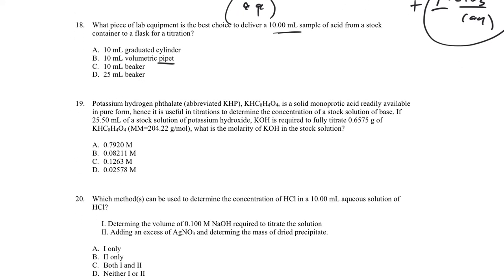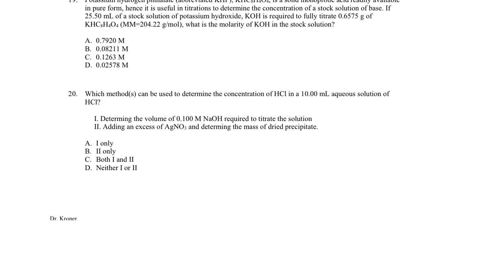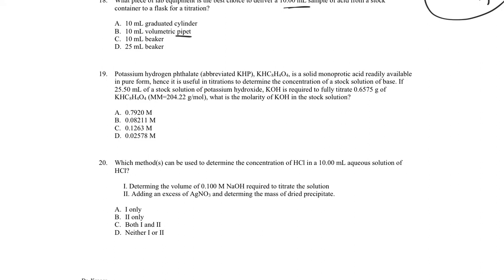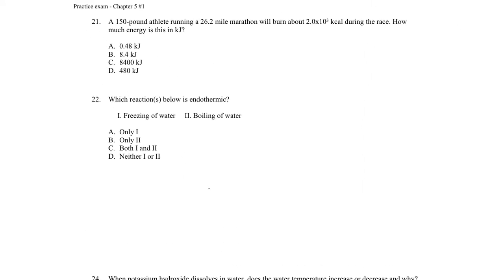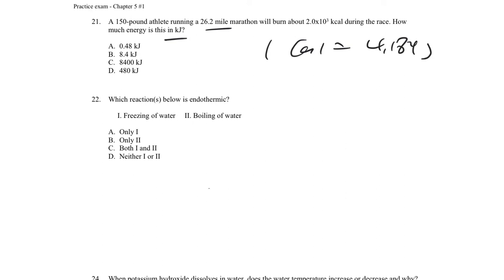Transitioning to some Chapter 5 questions now. There's a calorie-to-joule conversion problem — we won't make too big a deal of this; if needed, the conversion factor would be given. One calorie = 4.184 joules, so 1 kcal = 4.184 kJ. You'd just use that conversion factor to work out a problem like number 21.